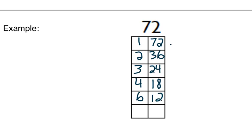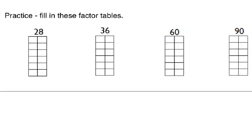Next, 72 divided by 7, well, 7 does not divide evenly into 72, so we will not include 7 on the table. Finally, 72 divided by 8 is equal to 9. And there is our completed factor table. Practice filling in these factor tables yourself.